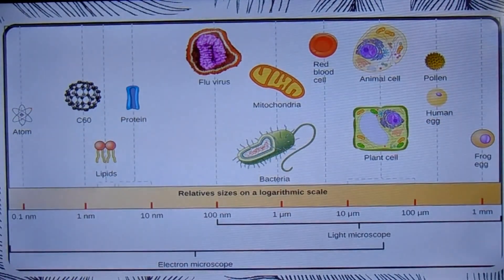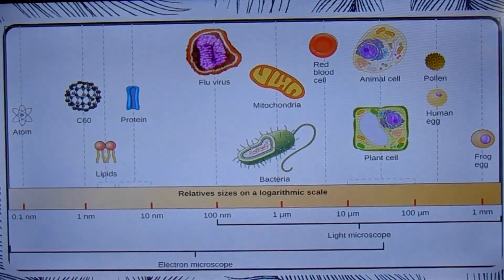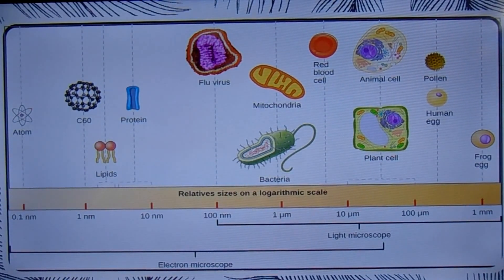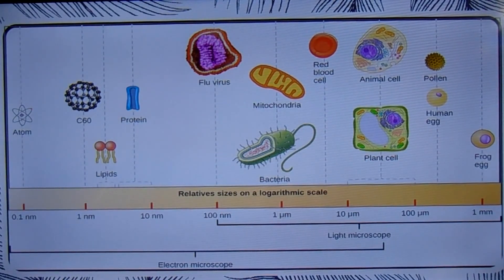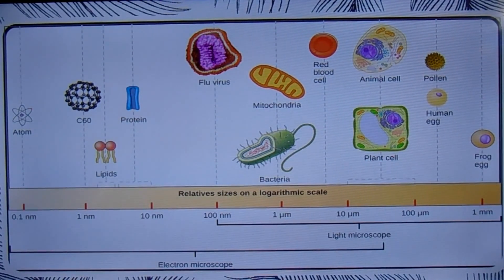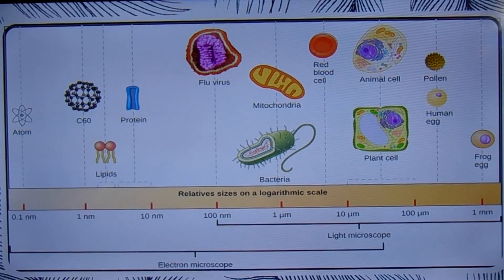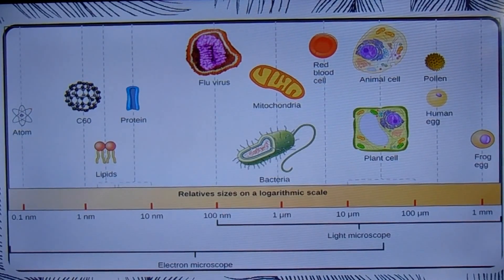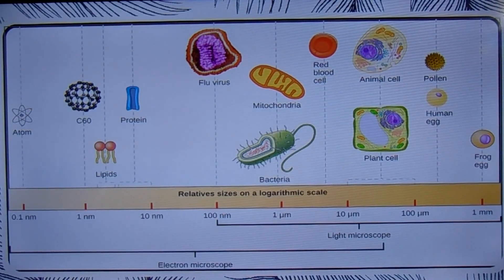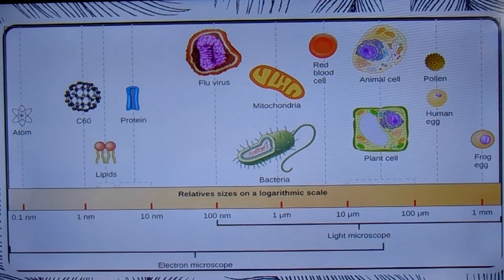That protrusion is 10,000 times longer than it is thick. The nerve cell receives signals from other nerve cells through a mass of shorter processes that sprout from its body like the branches of a tree.